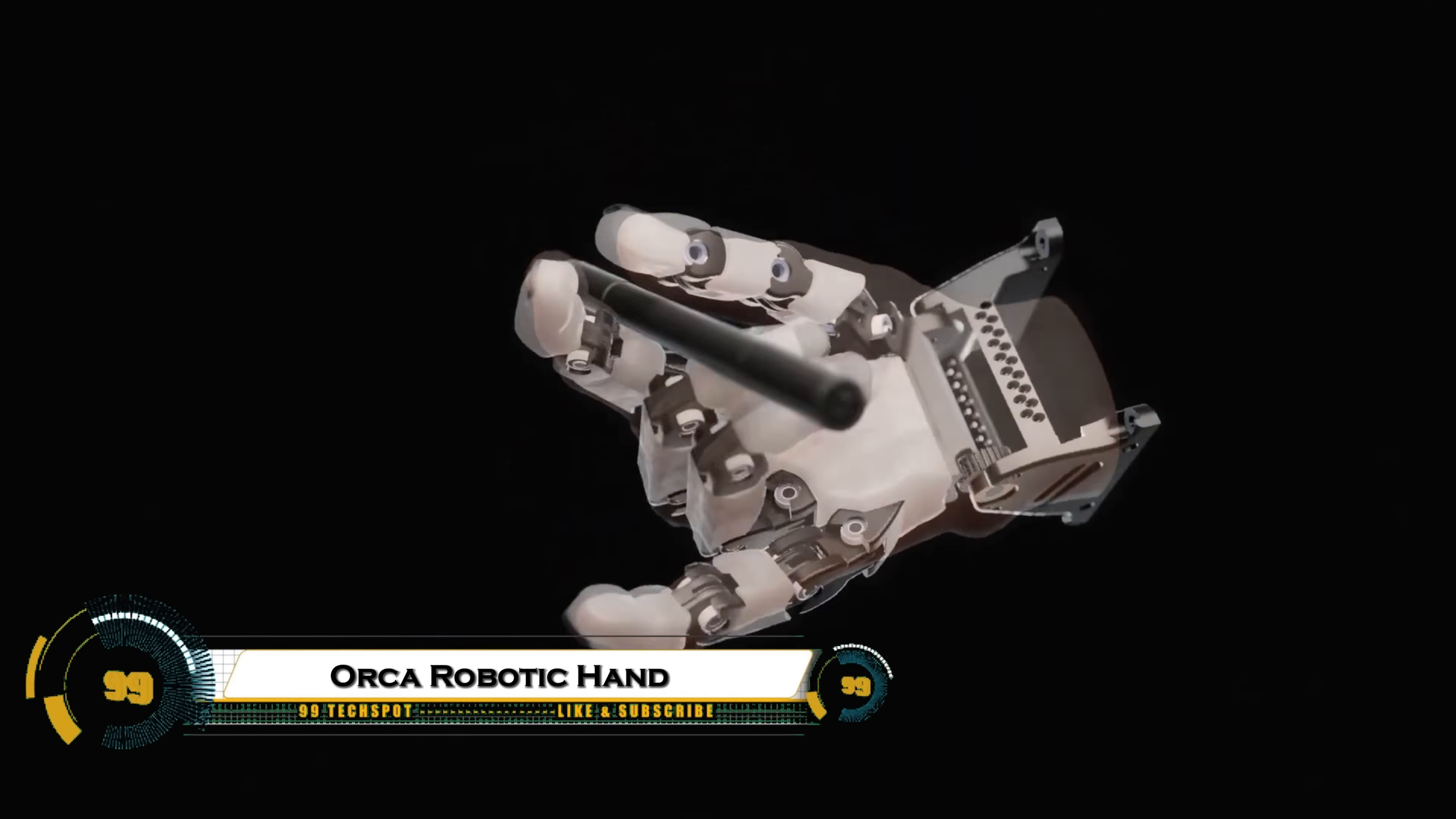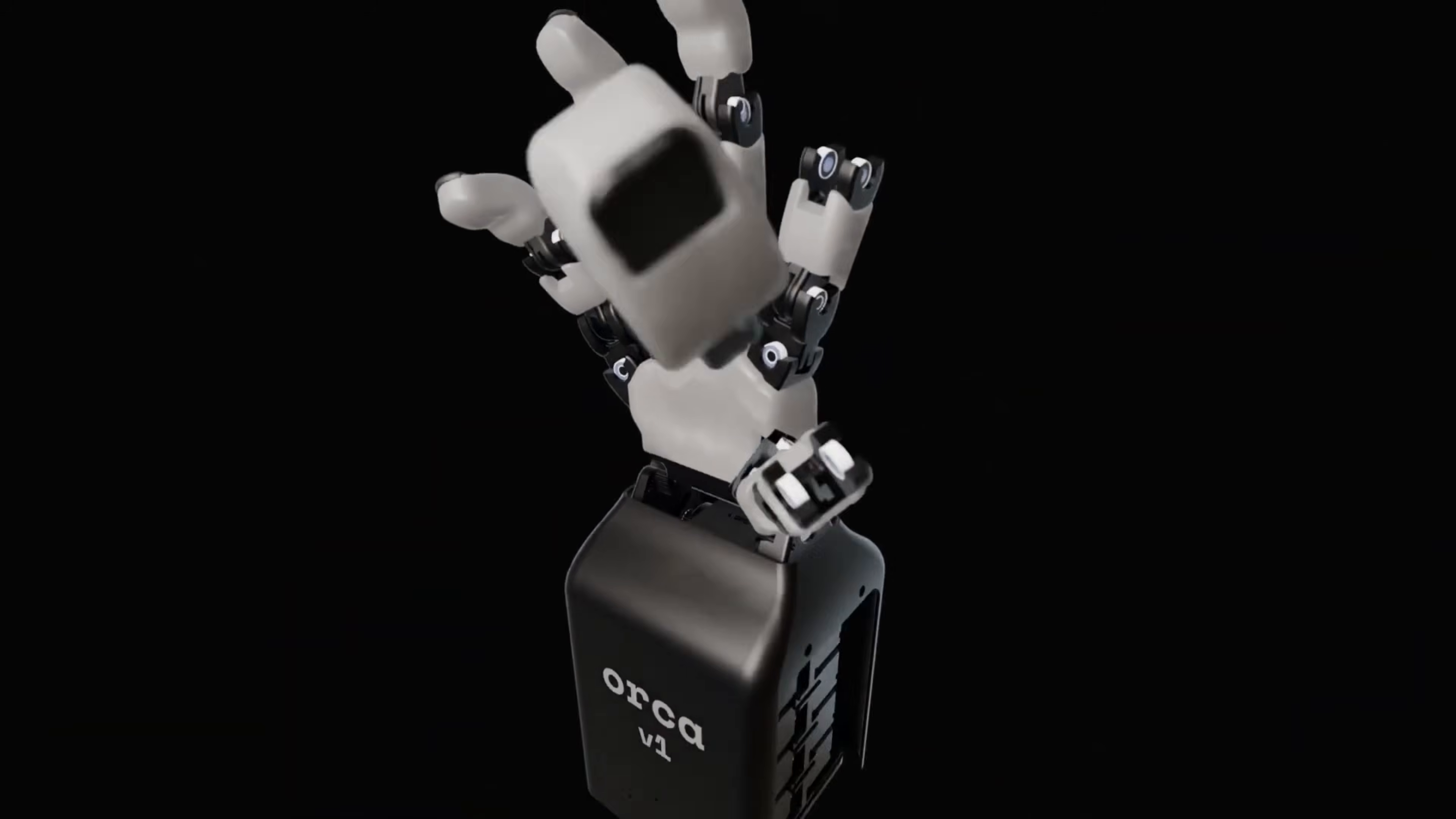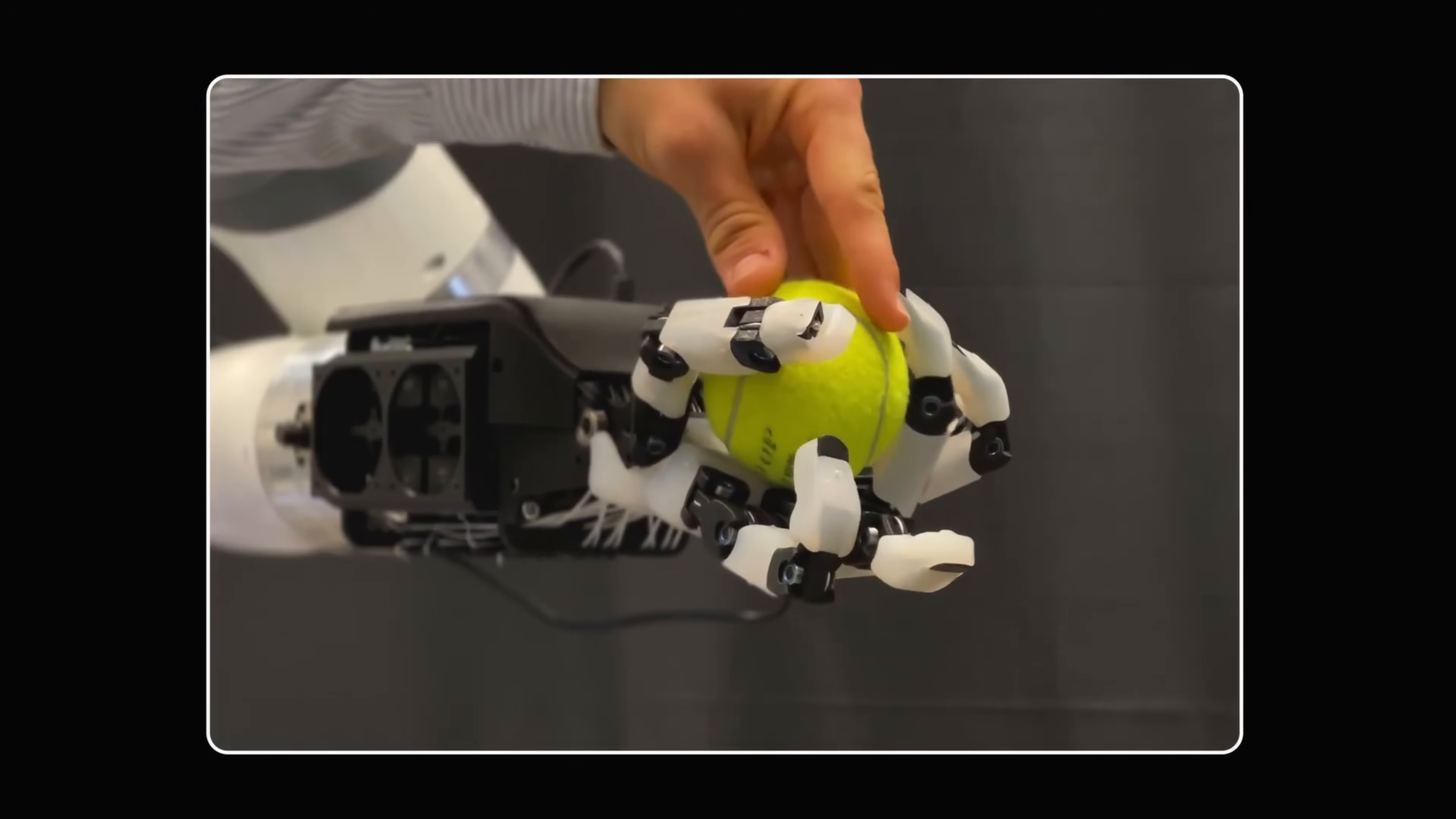The Orca Anthropomorphic Robotic Hand is a highly dexterous, tendon-driven robotic hand designed to closely replicate the human hand's structure with 17 degrees of freedom, including 16 in the fingers and one in the wrist. It combines reliability and advanced features such as popping joints that protect the hand from damage, auto-calibration, and low-friction tendon routing for smooth, precise movements.